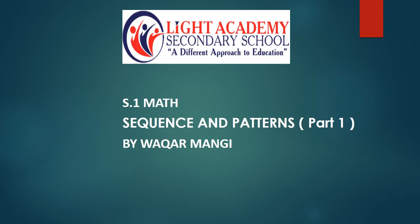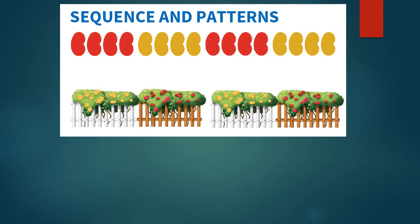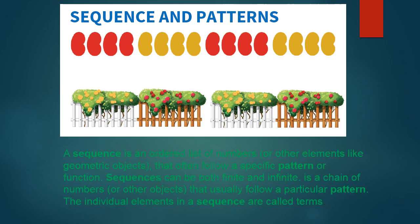So to understand well about sequences and patterns, let's go further. A sequence is an ordered list of numbers or other elements, like geometric objects — it can be numbers or objects but should be ordered. It often follows a specific pattern or function.